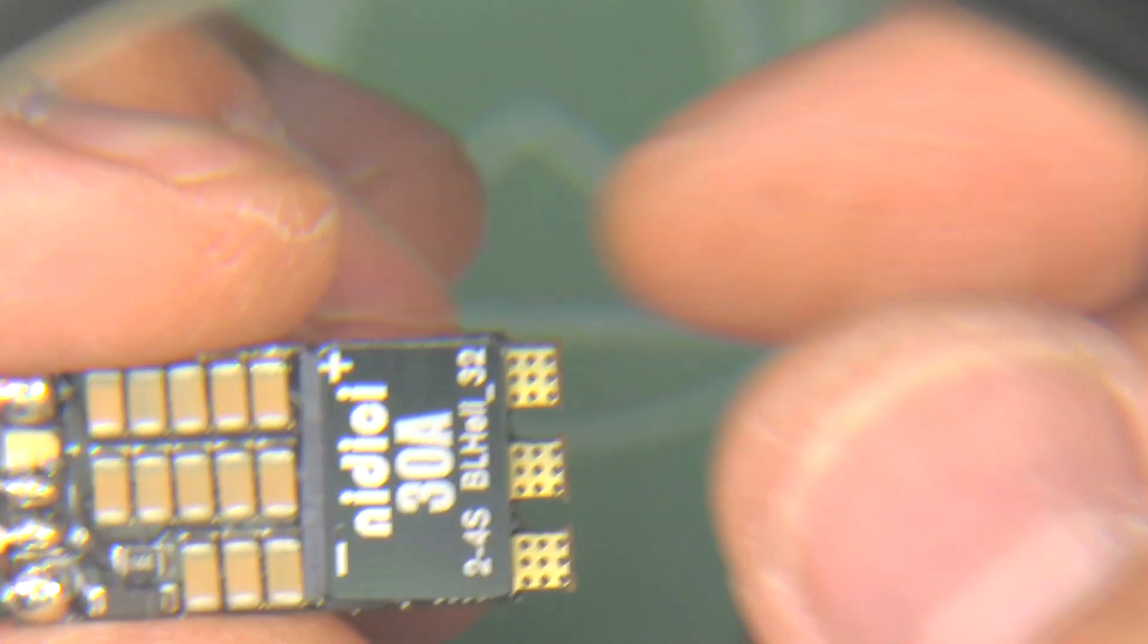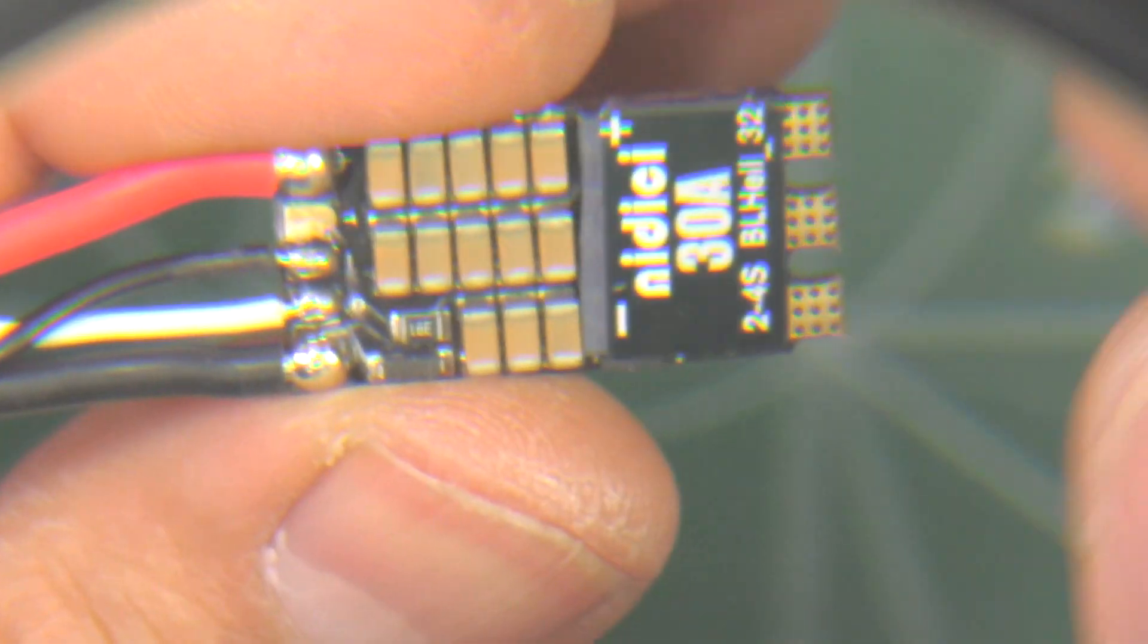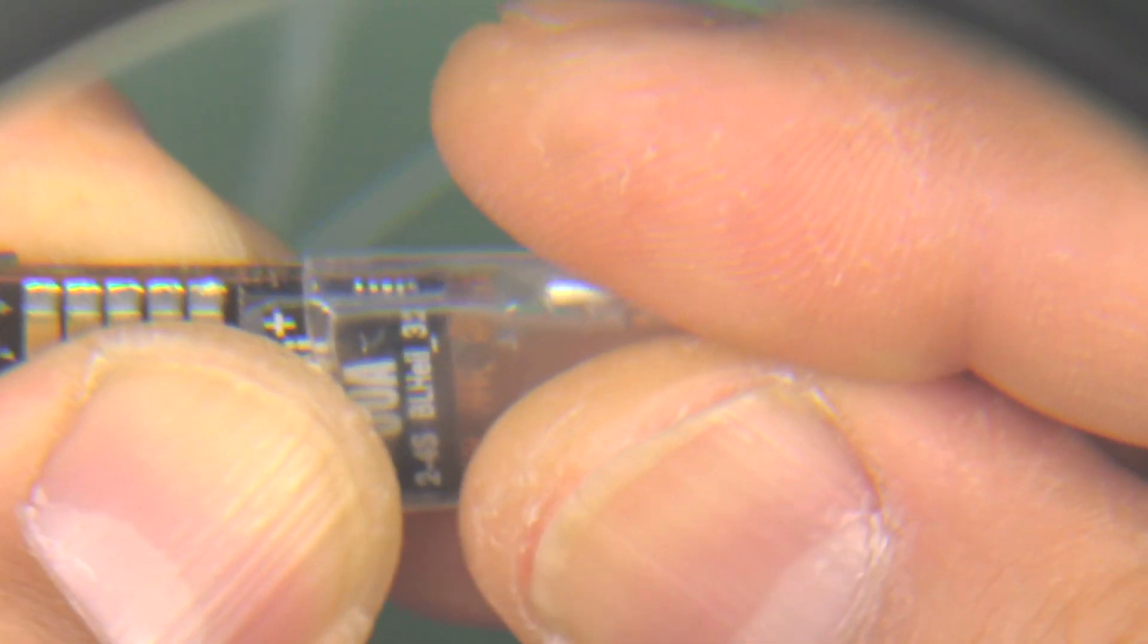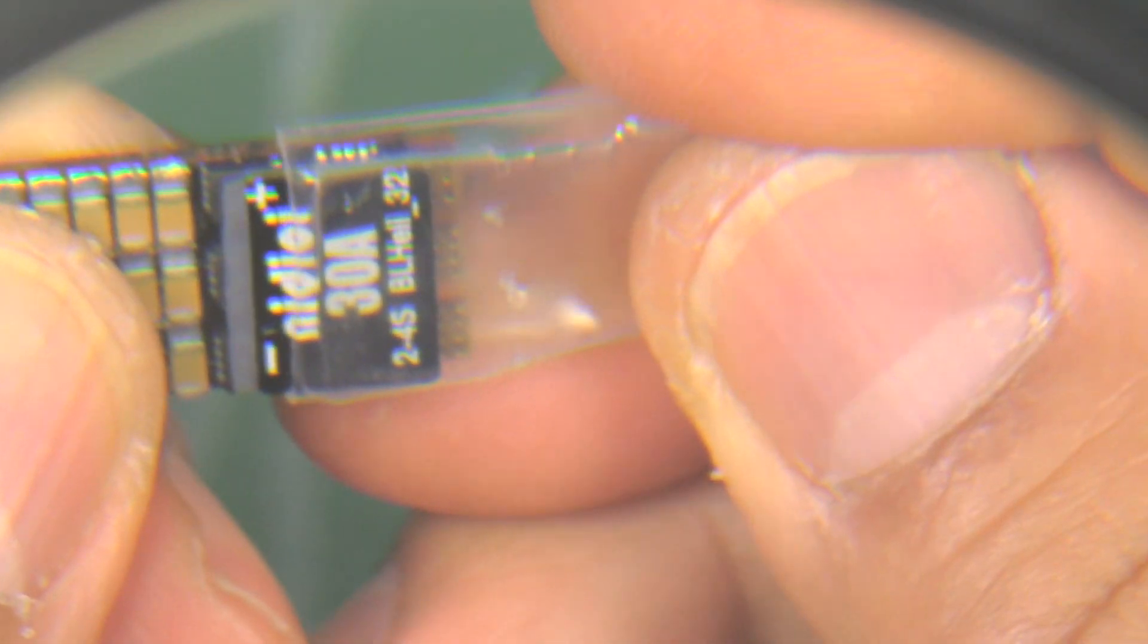They're so small and the price is what the 20 amp ESCs used to cost. It's just better to have some overhead, so why not just get some 30 amps.